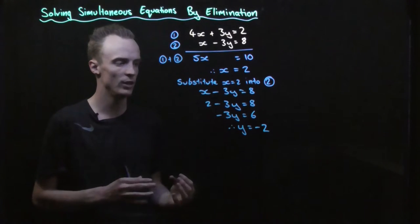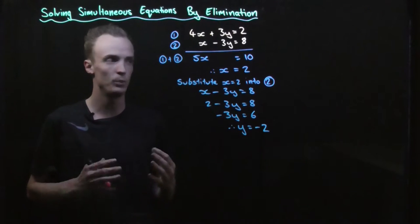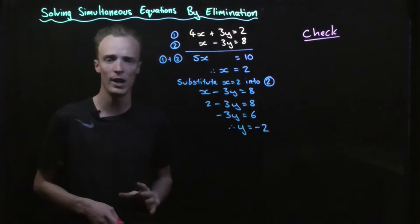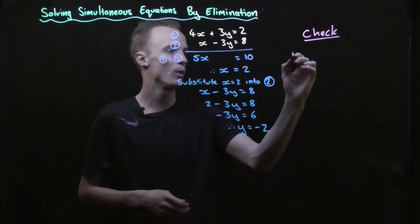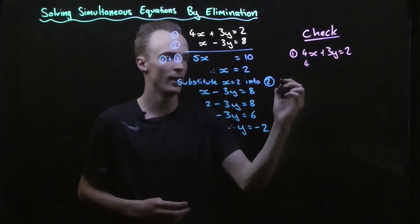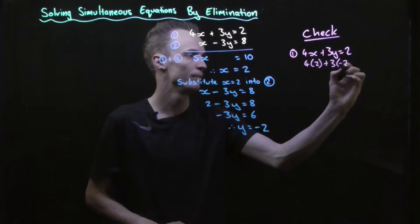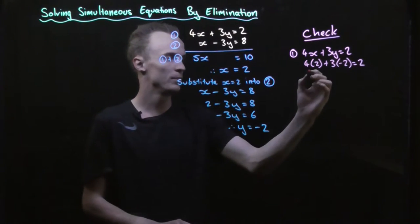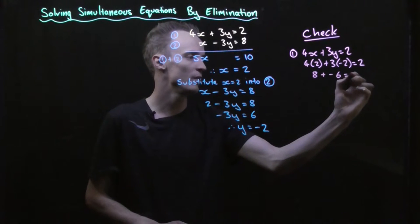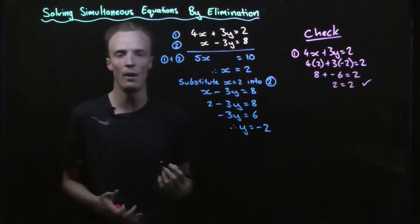So our solution is x equals 2 and y equals negative 2 — that's the point where these two lines intersect. We can also perform a check step where we substitute our x and y values into each equation and make sure it balances. Equation 1: 4x plus 3y equals 2. So 4 times 2 plus 3 times negative 2 equals 8 plus negative 6, which equals 2. Our equation balances for equation 1.